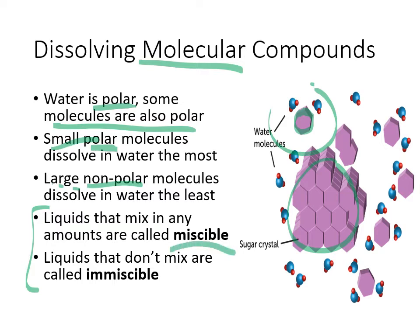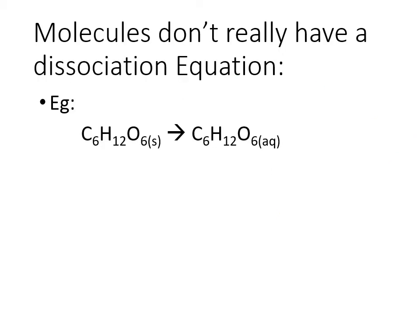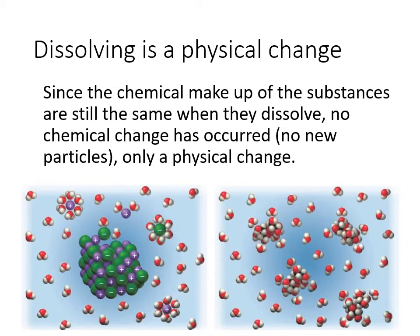For molecular liquids, the terminology for dissolving well is miscible. When liquids don't mix well, we say they are immiscible. For example, oil and water are immiscible, while alcohol and water are miscible. Molecules don't have a dissociation equation because they don't break up — there's no reason to write one. If you put solid glucose into water, you still have glucose molecules; they just become surrounded by water.